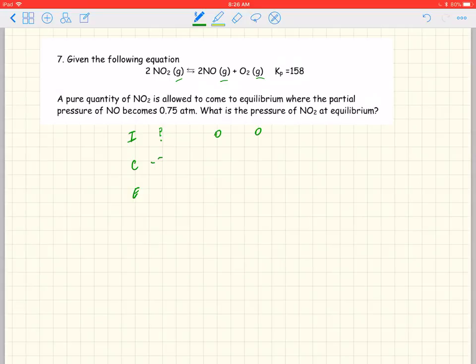Now this is going to go down by 2x, this is going to go up by 2x, and this is going to go up by x. You always put the plus x's under the zeros. Use the coefficients right in front of the x's there.